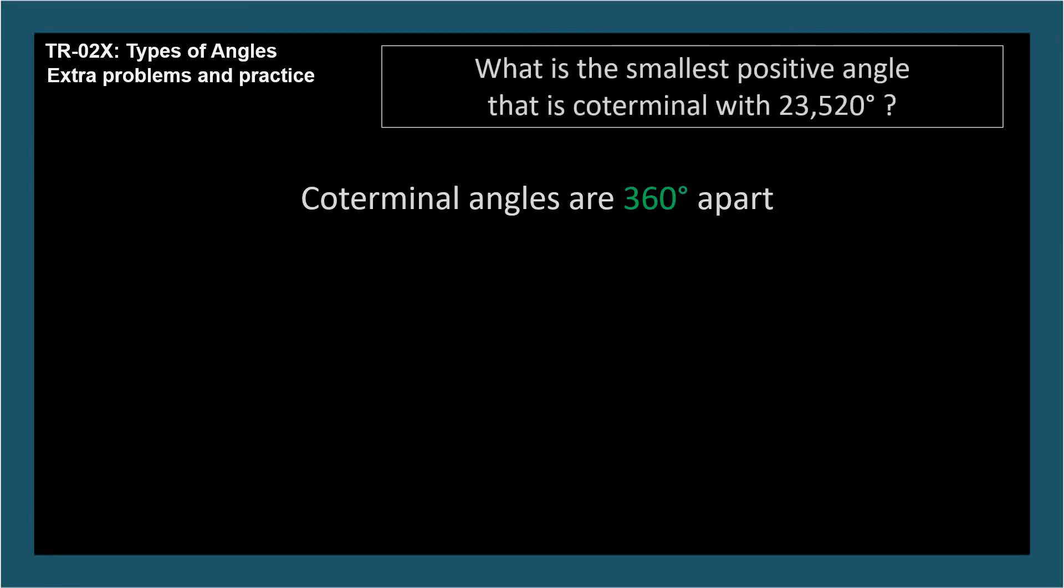What's the smallest positive angle that's coterminal with 23,520 degrees? Okay, this is asking for a coterminal angle less than 360 degrees. Well, we could subtract 360 degrees over and over until we get to a number less than 360 degrees, but that would take a long time. For this problem, we'd have to repeat that process over 60 times.